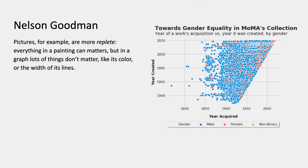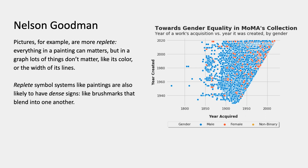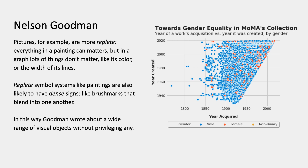Goodman said pictures are more replete than graphs. In a graph you can change an awful lot of things — make the lines thicker, change the color, change the font, even distort it — and it still means the same. But pictures and visual artworks are more replete, meaning every little change can make a difference. Replete symbol systems like paintings are also very likely, he said, to have dense signs — like brush marks that blend into one another, as opposed to letters that have spaces between them. It's a very democratic way of thinking: he was really only interested in the logical structures or systems of denotation, no matter where they were found — fine art, low art, engineering, graphs, whatever.